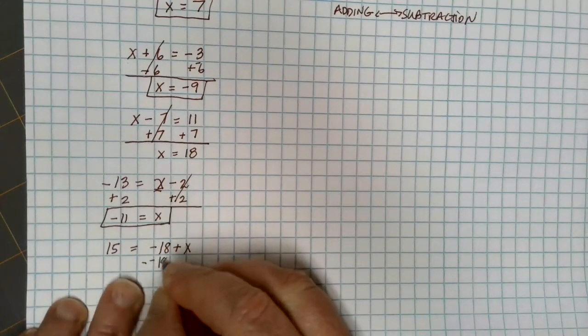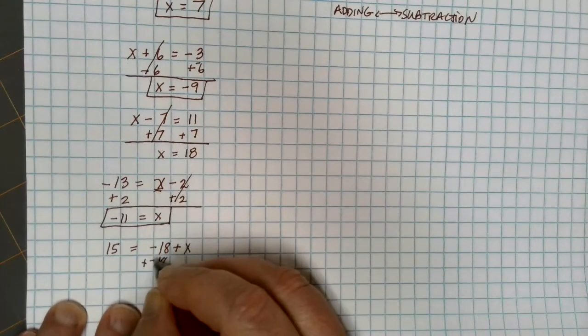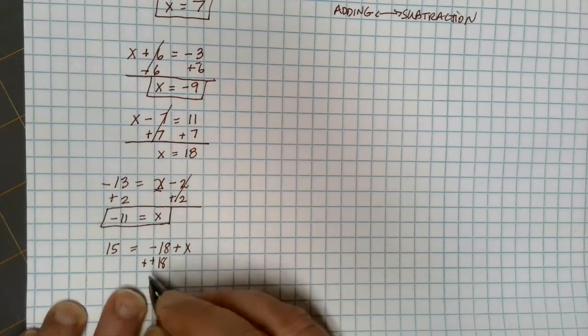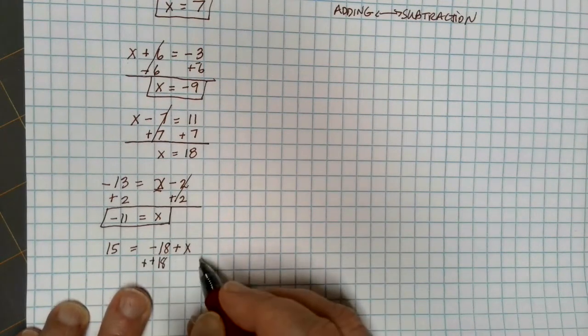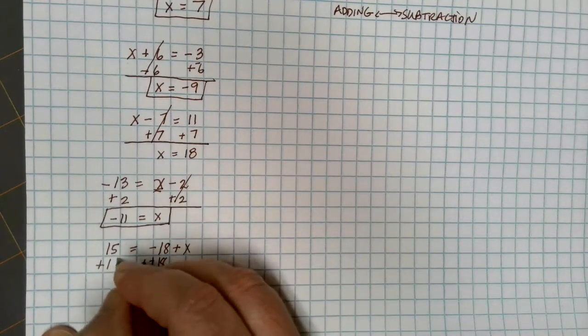Now if you remember, if we're subtracting, we can change it to an addition and change the opposite sign. So technically, to get rid of this negative 18 that's being added to the x, I'm going to add 18.